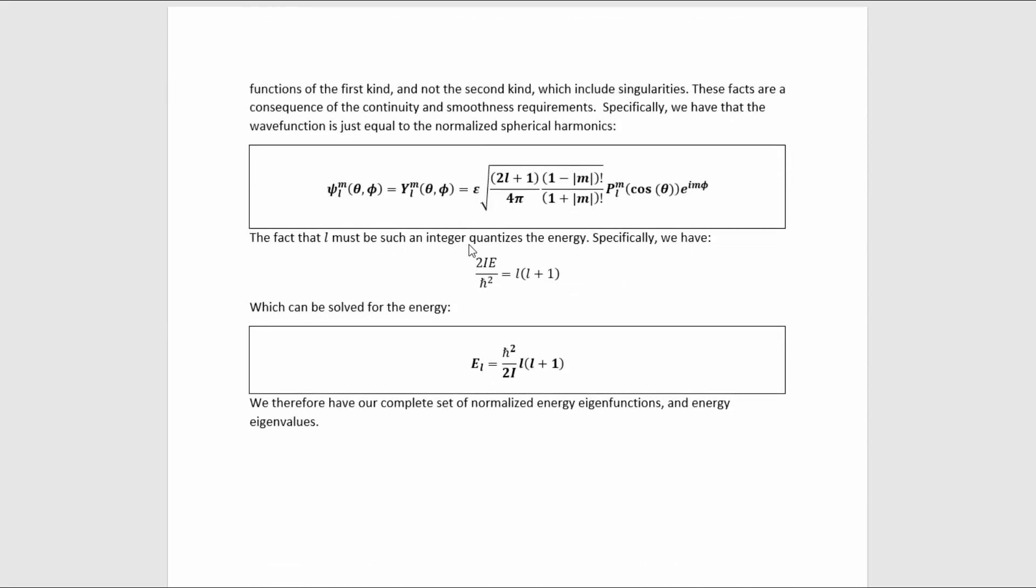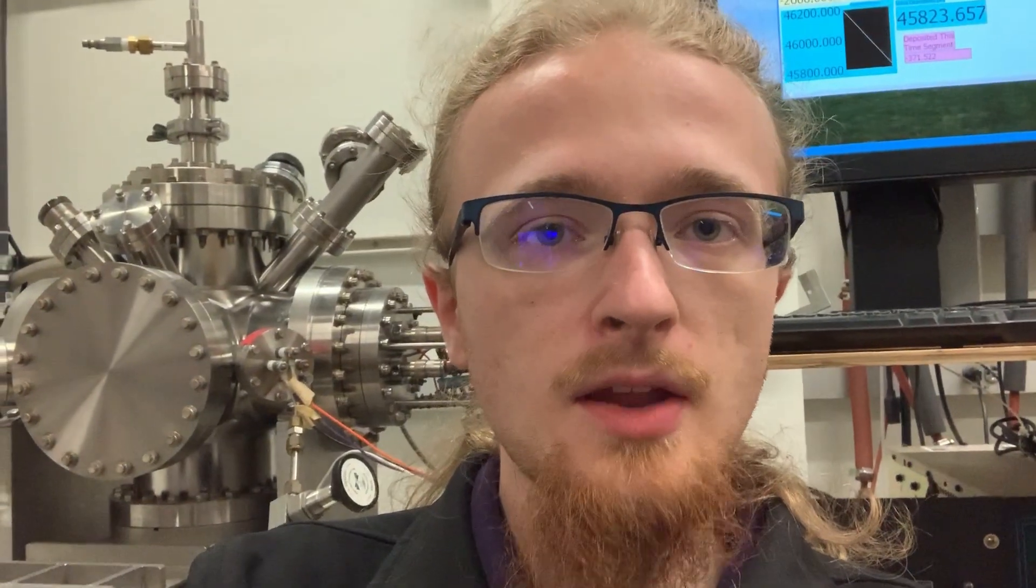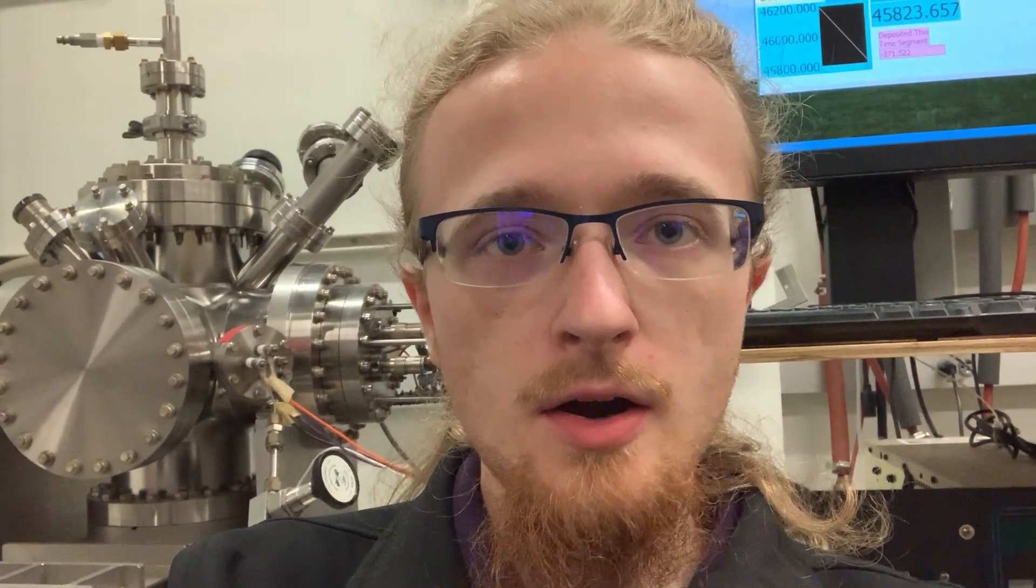The fact that L must be such an integer quantizes the energy. Specifically, we have this relation. This can then be solved for the energy to give us the quantized energy levels. We therefore have our complete set of normalized energy eigenfunctions and energy eigenvalues. We have completely solved our problem. So now you know how to set up and solve the Schrödinger equation for the quantum rigid rotor. It actually isn't that hard because most of the work is already done whenever you solve the angular momentum eigenvalue relations for the spherical harmonics. We can just apply that result to this to get the beautiful and highly useful solution very quickly.